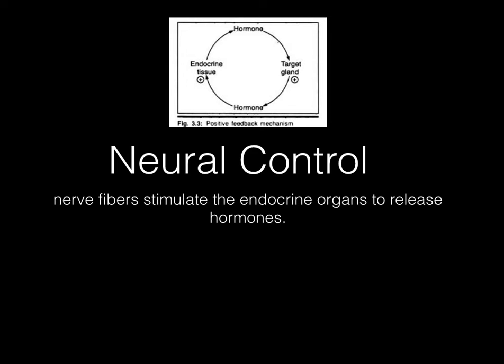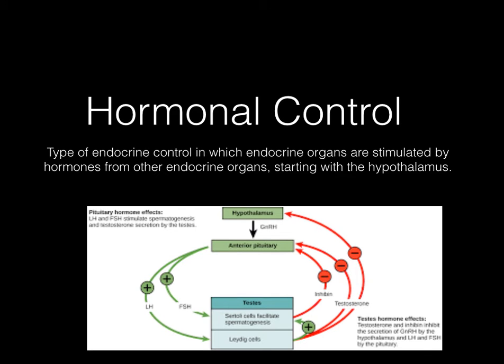Neural control is when nerve fibers stimulate the endocrine organs to release hormones, and we'll talk more about those as we go. There's also hormonal control, which is a type of endocrine control in which endocrine organs are stimulated by hormones from other endocrine organs. This all starts with the hypothalamus — the hypothalamus is really the main part in regulating hormonal control. Think about the hypothalamus as kind of the president that's telling everything else what to do.